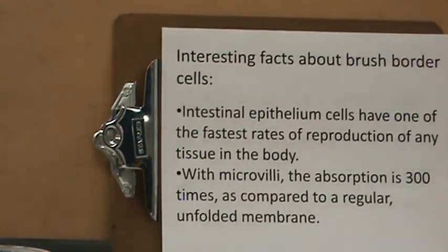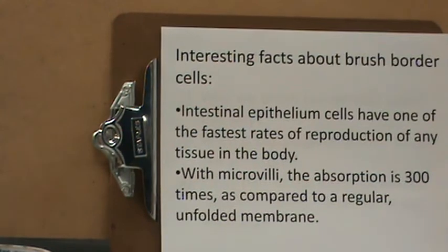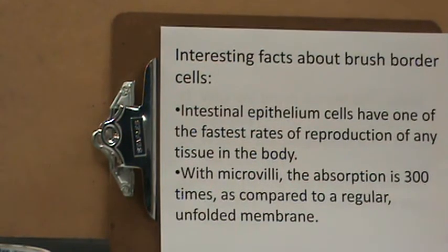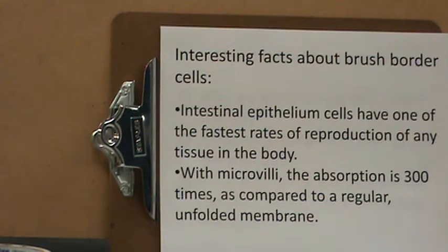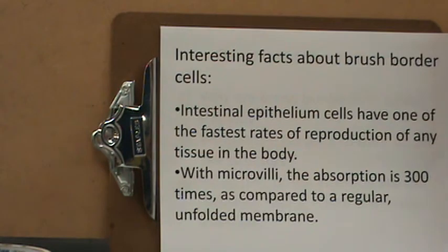Interesting facts about brush border cells: the intestinal epithelium cells have one of the fastest rates of reproduction of any tissue in the body. With microvilli, the absorption is 300 times faster compared to a regular unfolded membrane.